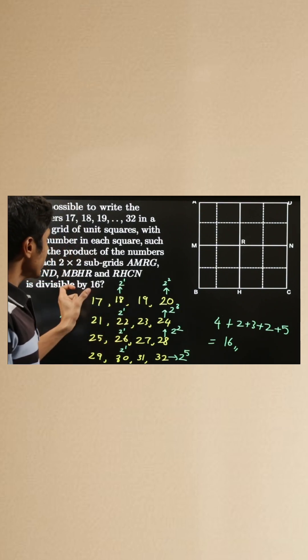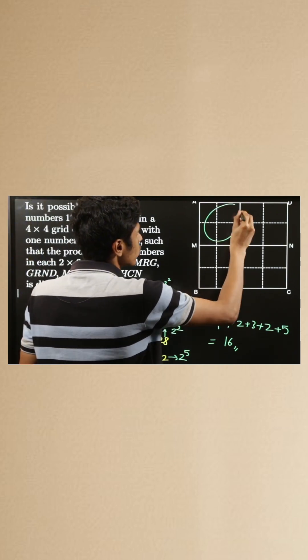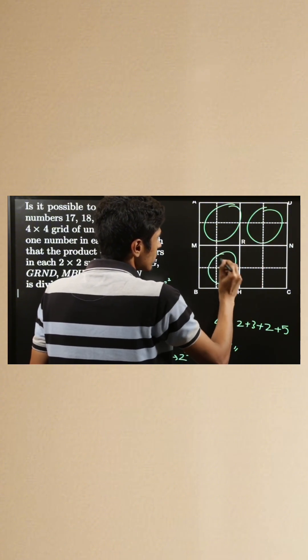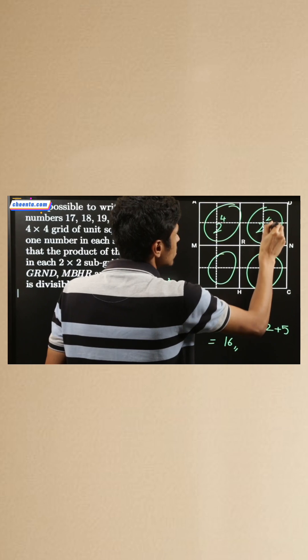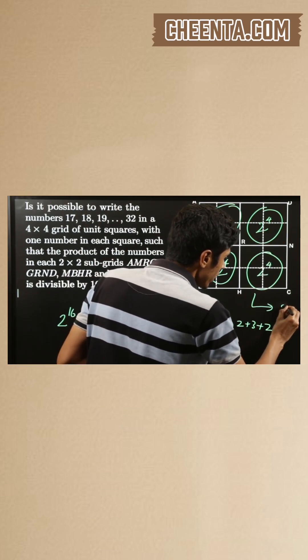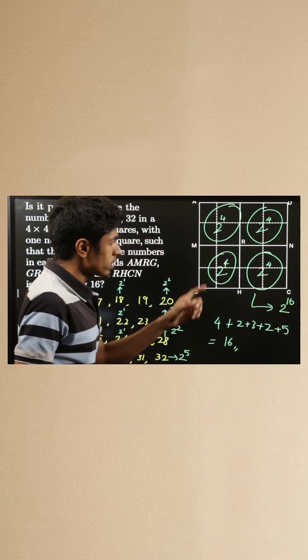And we also need each of these 2 x 2 squares product to be divisible by 2 power 4. So the total product would have 2 power 16.